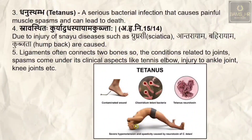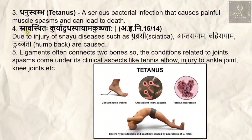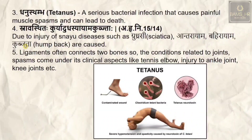Dhanus stambha is correlatable with tetanus — a bow-shaped posture due to a serious bacterial infection causing painful muscle spasms, which can lead to death. Additional snayu-related diseases include gridrasi (sciatica), kujjata (hunchback), and other conditions arising from snayu injuries — snayu asthita kuryat diseases like stayama and kujjata.